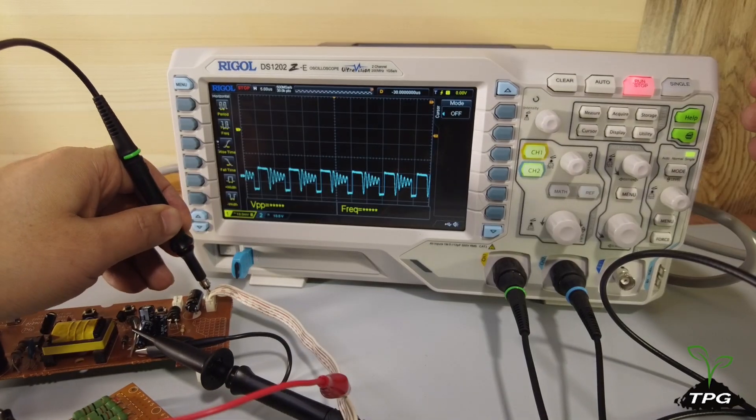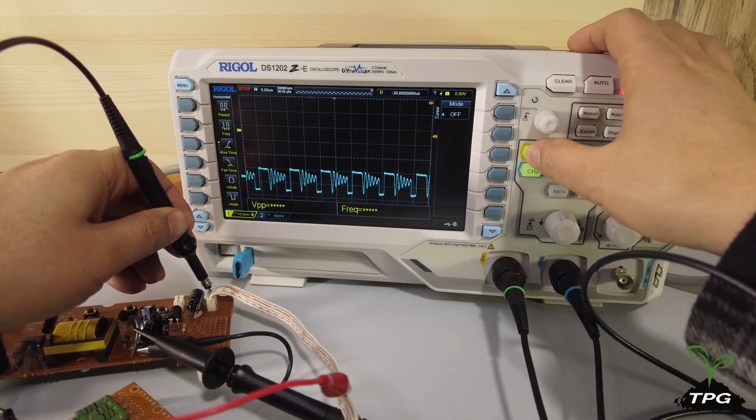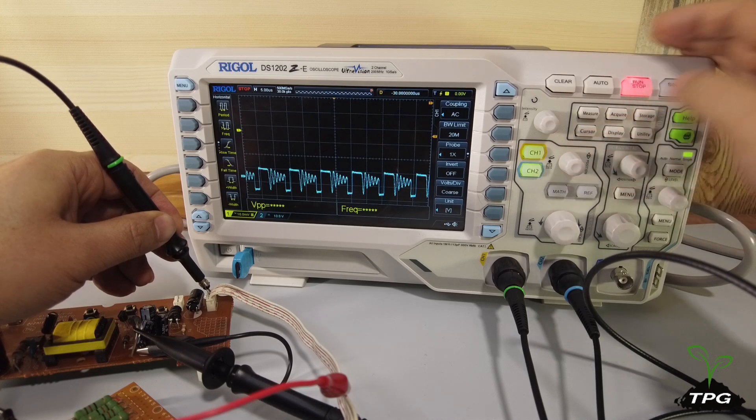This video focuses on the low-frequency ripple voltage, primarily influenced by the mains frequency within the SMPS circuit.